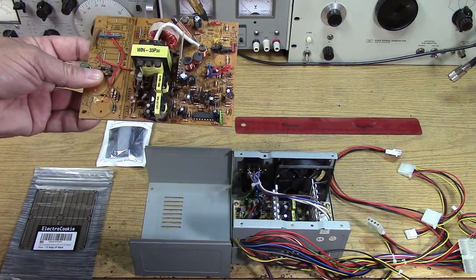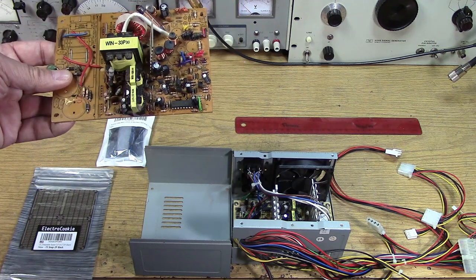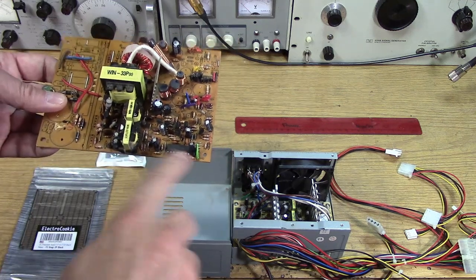Take any AT power supply, and the early ATX power supplies that are usually 300 watts or so, and you're likely going to find this chip in there.